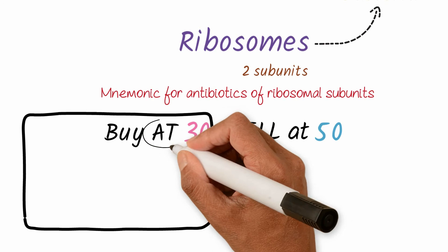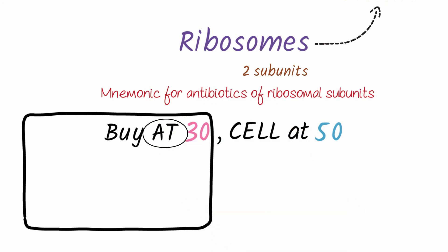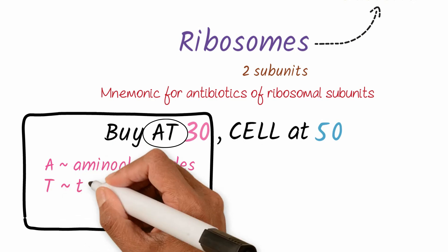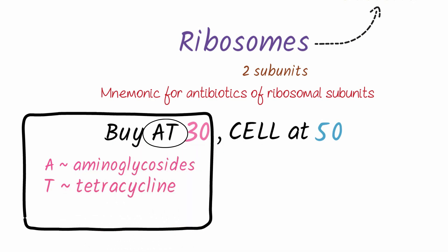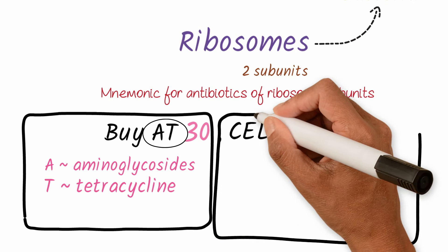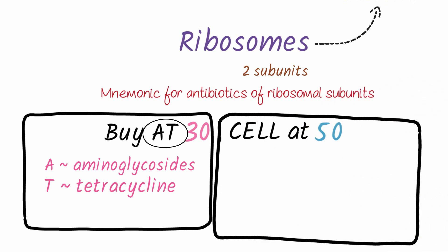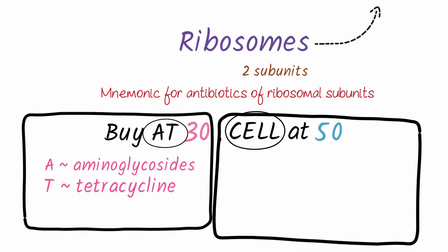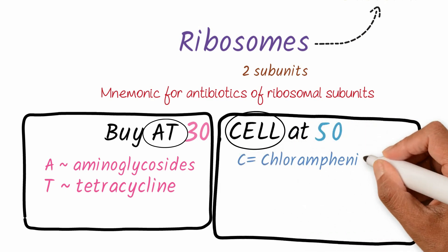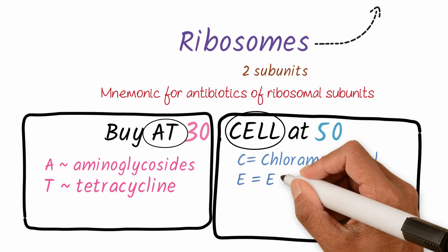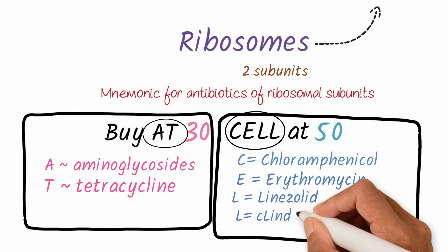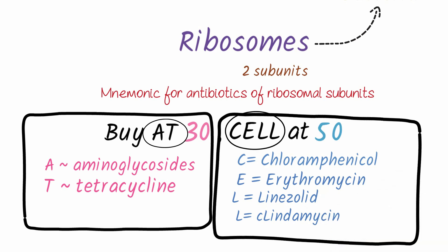In 'Buy AT 30': A stands for aminoglycoside and T stands for tetracycline, both acting on the 30S subunit. In 'Sale at 50': C stands for chloramphenicol, E stands for erythromycin, L stands for linezolid, and another L stands for clindamycin, all acting on the 50S subunit.